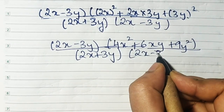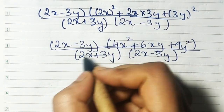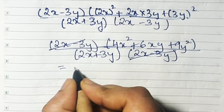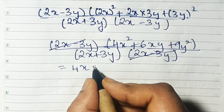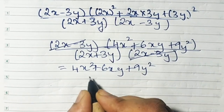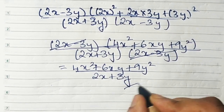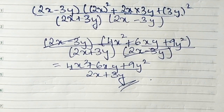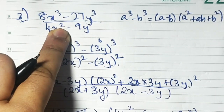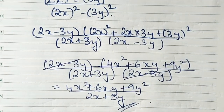Now cancel (2x - 3y) from top and bottom. What remains is (4x² + 6xy + 9y²)/(2x + 3y). We converted into the cube pattern on top and square pattern on the bottom, then applied the formulas, cancelled, and solved.